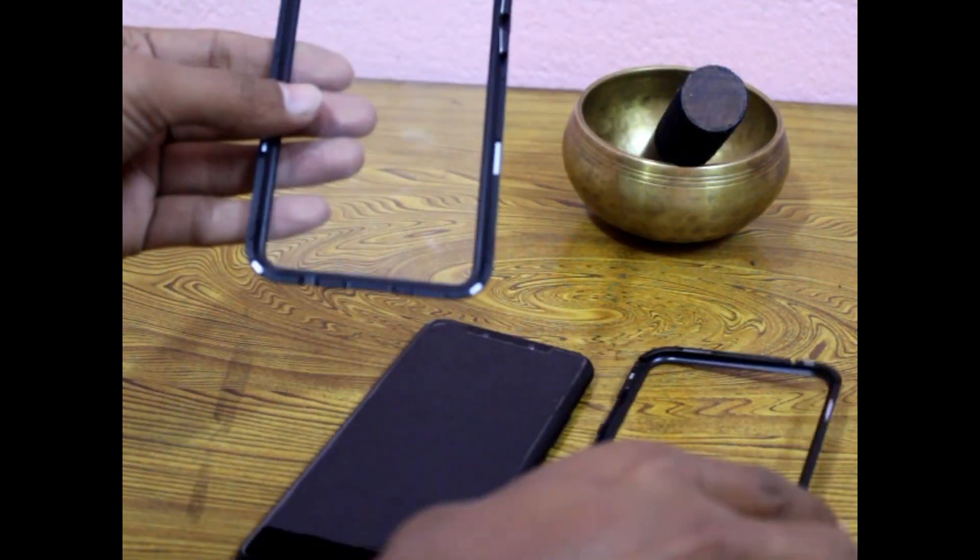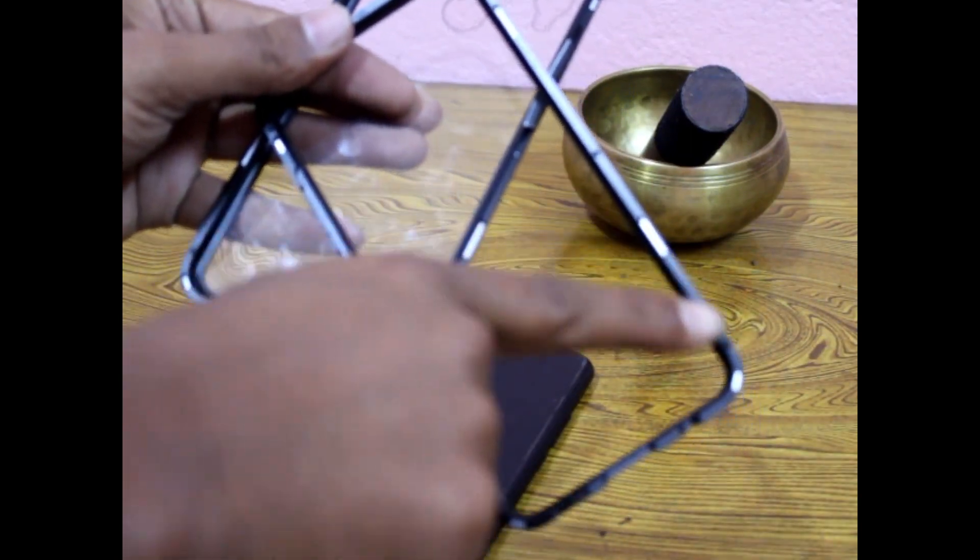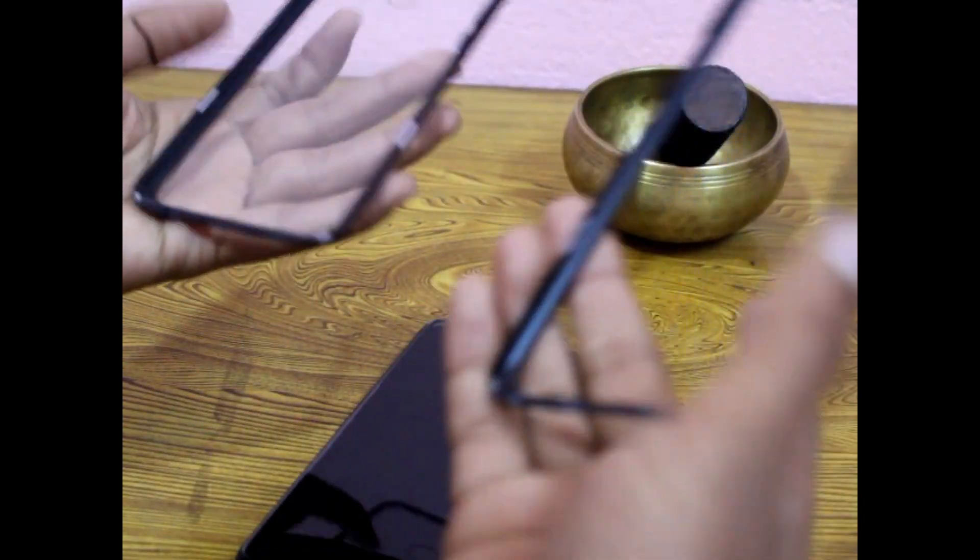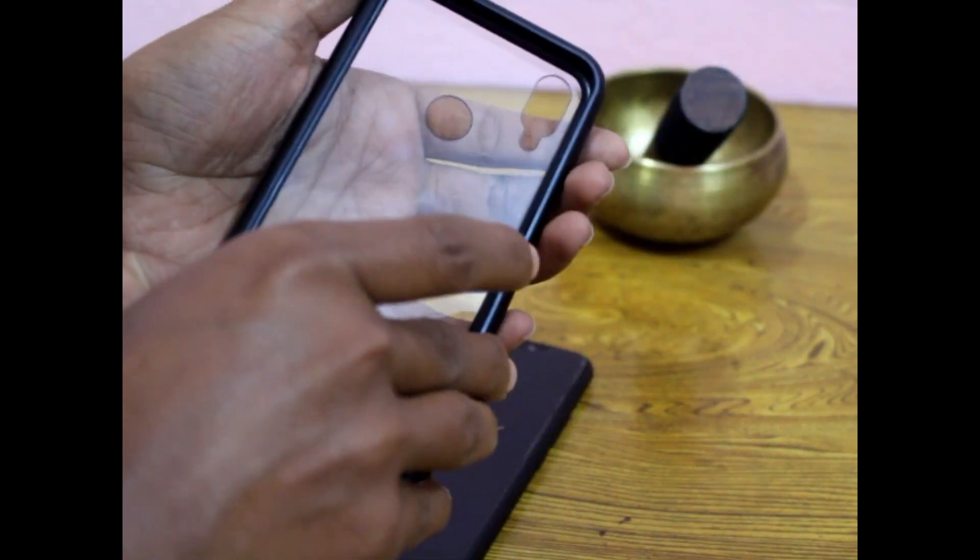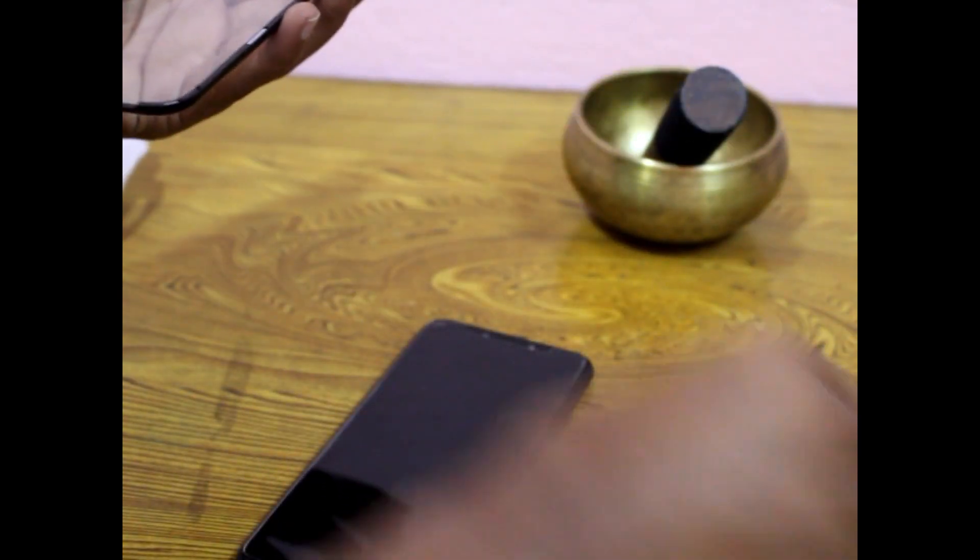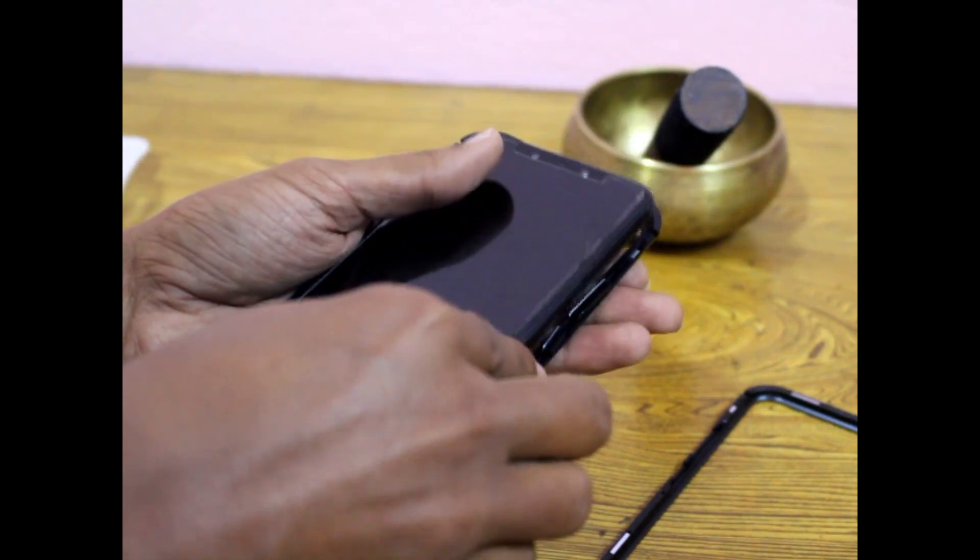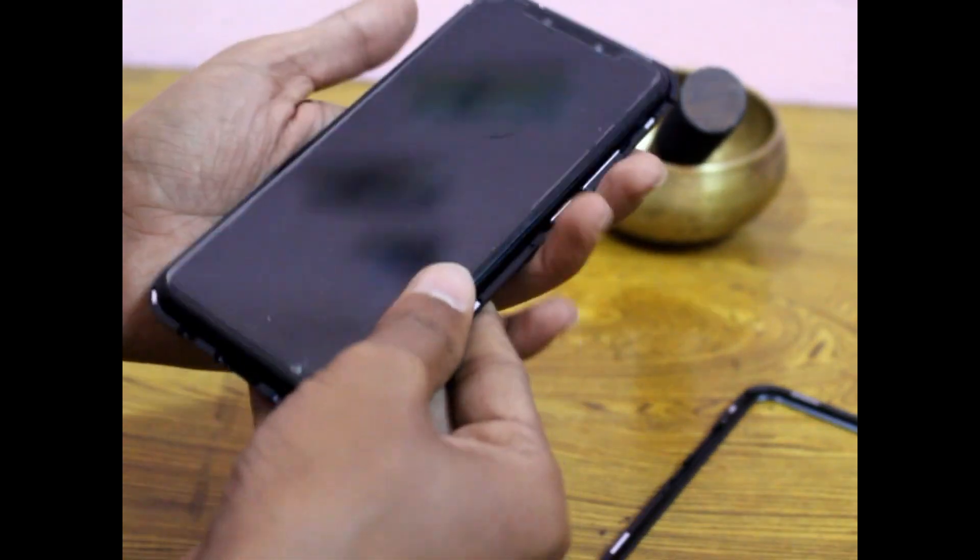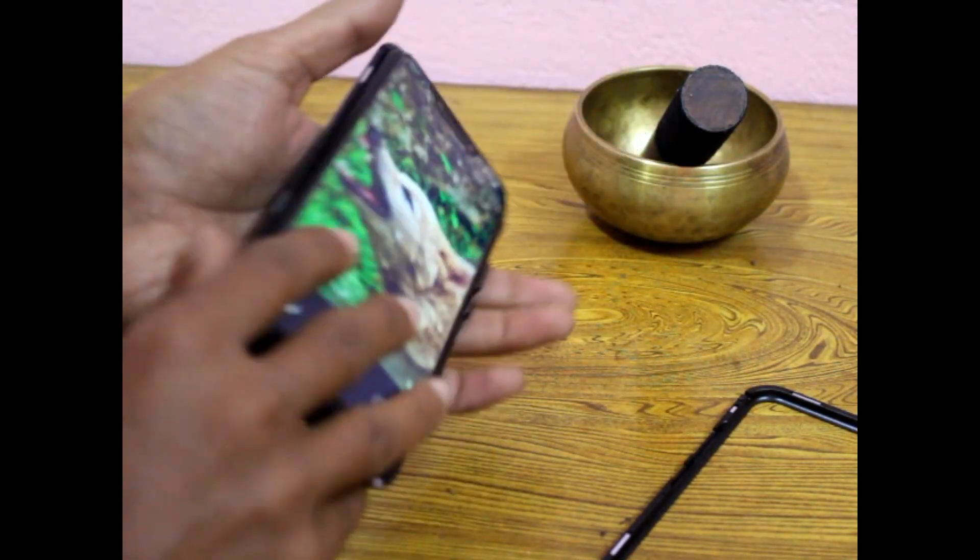Once you insert your phone inside, you can hold it easily and the grip of this attachment is pretty good. Now I'm going to insert my Huawei Nova 3i inside this case cover. This fits pretty well on this device. Once you insert it and click the upper part together,